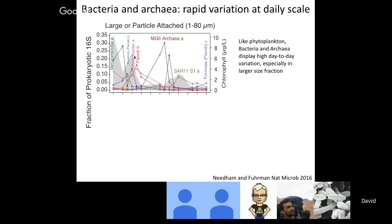In general, the small free-living size fraction was less dynamic. SAR11 tended to dominate. SAR92, which is a heterotrophic gamma-proteobacterium, was quite abundant — up to 12% in the small free-living size fraction — but only over about 10 days in March. Interestingly, there's some evidence suggesting marine group 2 archaea are associated with particles, but our data also suggests they're free-living, with equal abundance of marine group 2 archaea in both the small and particle-attached or large-sized fractions.